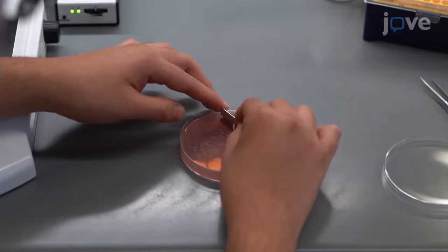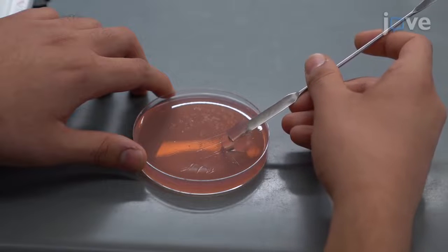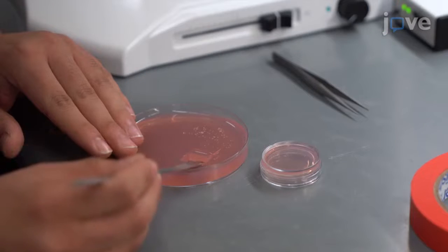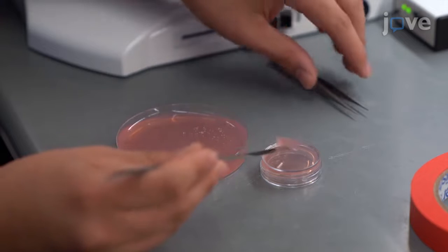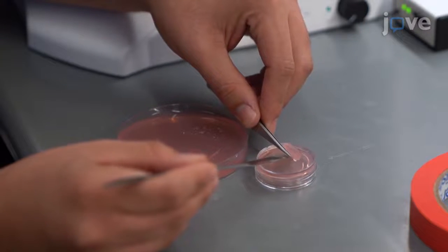Cut a second rectangle next to the first and remove the second rectangle with the straight edge side of a stainless steel spatula. Carefully slide the straight edge of the spatula under the first rectangle and remove it. Then place the cutout with embryos on the external side of a 3.5 cm dish.